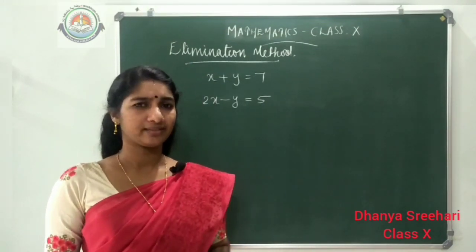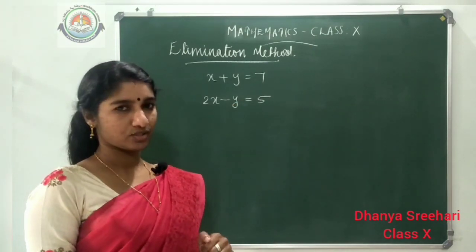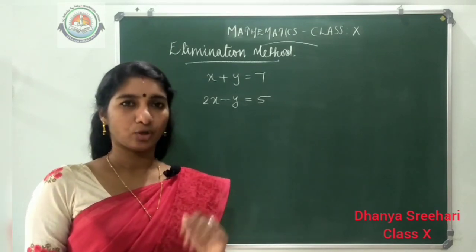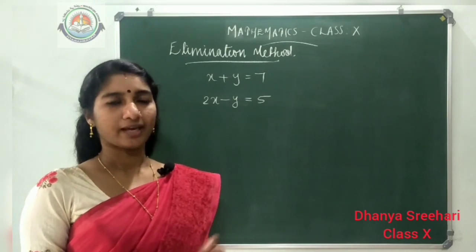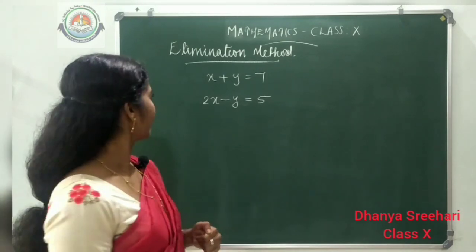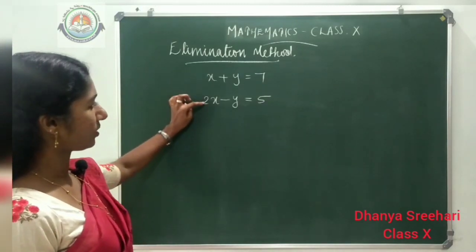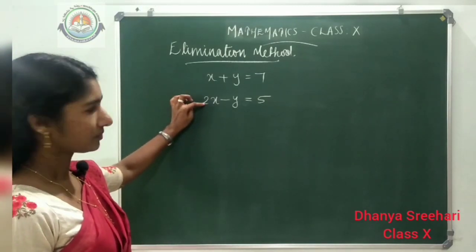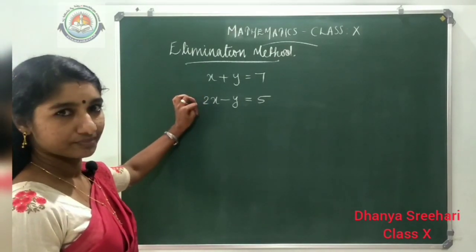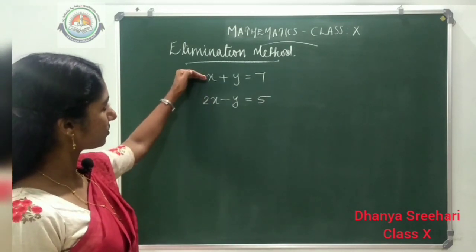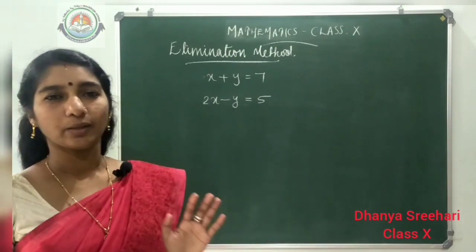How can we eliminate a variable? While adding or subtracting these two equations, or any other operation, it is possible to eliminate one variable. For that, focus on the coefficients. Here the coefficient of x is 1 and the coefficient of x in the second equation is 2. While adding it will come 3x, and while subtracting it will come 1x — so x will not be eliminated.